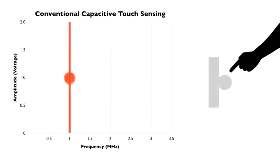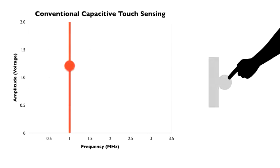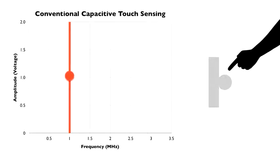This value goes up or down, depending on if a finger is touching. This generally means capacitive touch-sensing is binary. Either the user is touching, or they are not.